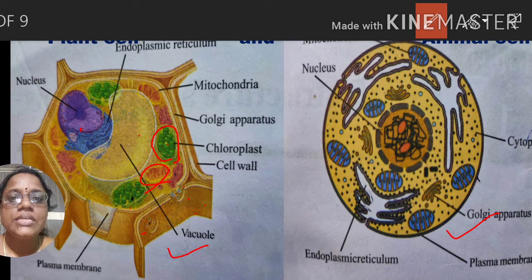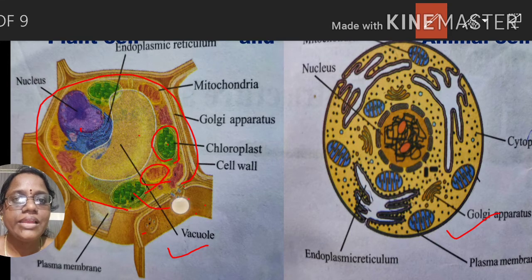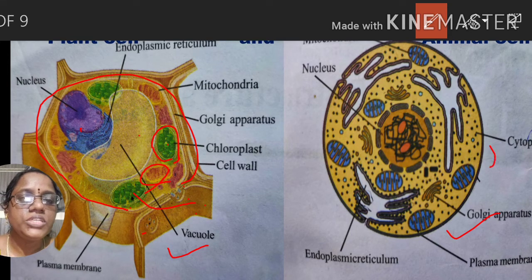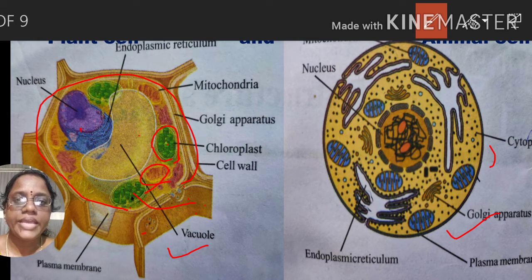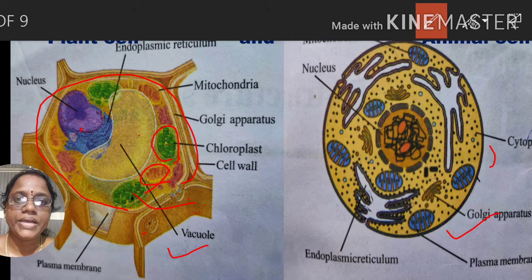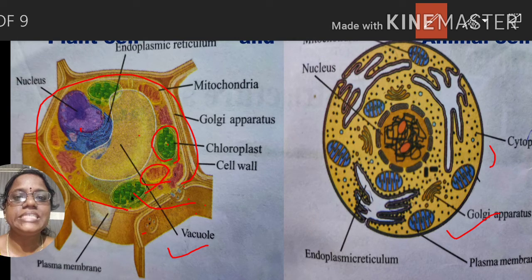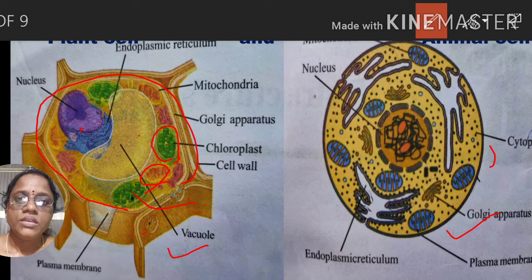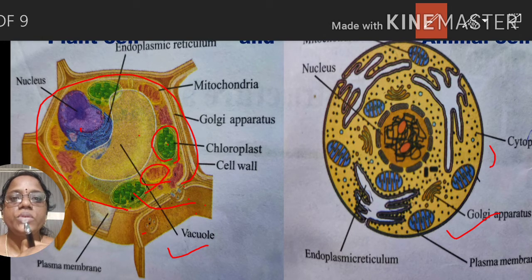The parts present inside the cell membrane are called cell organelles. Each and every cell organelle has a specific function to carry out. For example, in our body, the heart has a specific function — it circulates blood to all parts of the body. Similarly, each cell organelle carries out specific metabolic activities within the cell.